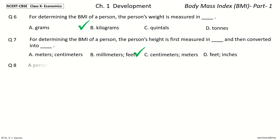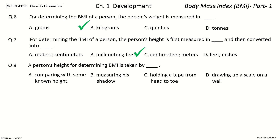Question 8: A person's height for determining BMI is taken by dash. The options are: comparing with some known height, measuring his shadow, holding a tip from head to toe, drawing up a scale on a wall. And the answer is drawing up a scale on a wall.